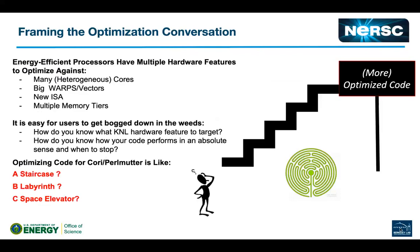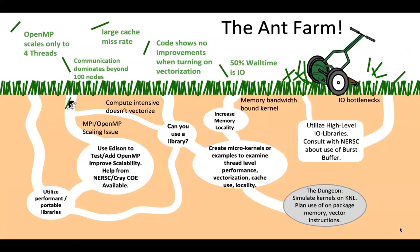NERSC spent a lot of time framing this conversation with users. They considered different analogies for the optimization process — a staircase or space elevator where one change makes everything fly, or a labyrinth where you can never escape. The cartoon analogy they settled on was an ant farm, where you're constantly running a lawnmower over your code to decide what the current bottleneck is and what to do to address it.